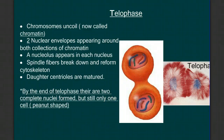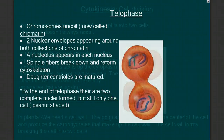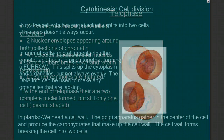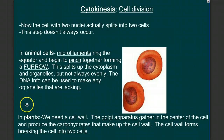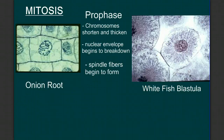Most of the time, following telophase will be cytokinesis — dividing up the cell. We're going to see how this is different in animal and plant cells. But first, let's walk through those stages again using slides of real cells, instead of those drawings.